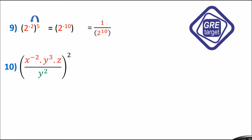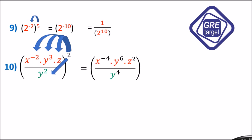Example 10 (last example): 2x raised to minus 2 times y cubed times z divided by y squared, the whole squared. Applying the expanded power rule: x raised to minus 4 (since minus 2 times 2), y raised to 6 (since 3 times 2), z squared (since 1 times 2), and y raised to 4 in the denominator (since 2 times 2). Applying the quotient rule for y: 6 minus 4 equals 2. The final answer is x raised to minus 4 times y squared times z squared. Thank you.